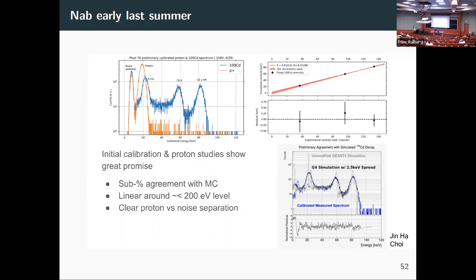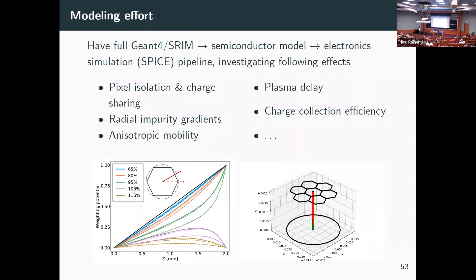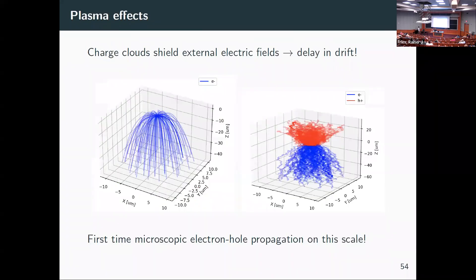We clearly see our proton peak in blue from the calibration source, ¹⁰⁹Cd, which has an X-ray conversion line. We can see the proton peak just above the noise, nicely separated, and get a good calibration. No major wrenches in the machine at this level. We've constructed this modeling effort covering a whole range of effects, and I'll show a couple of examples I think are particularly cool.